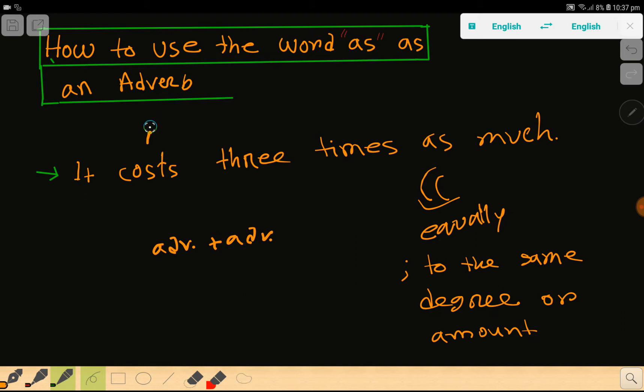So we have to take an example. Look at this sentence: It costs three times as much. That is, it costs equal to three times.